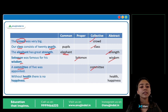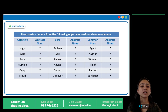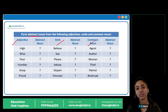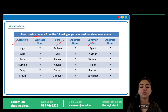'Without health, there is no happiness.' Yahan pe dono abstract nouns hain — health aur happiness. Intangible ideas. Next, we have an exercise. Yahan pe aapko kya karna hai? You have to form abstract nouns. Aapko yahan pe adjectives diye hain, verbs diye hain, aur common nouns diye hain. You have to convert these into abstract nouns. Pause the video and note your answers.